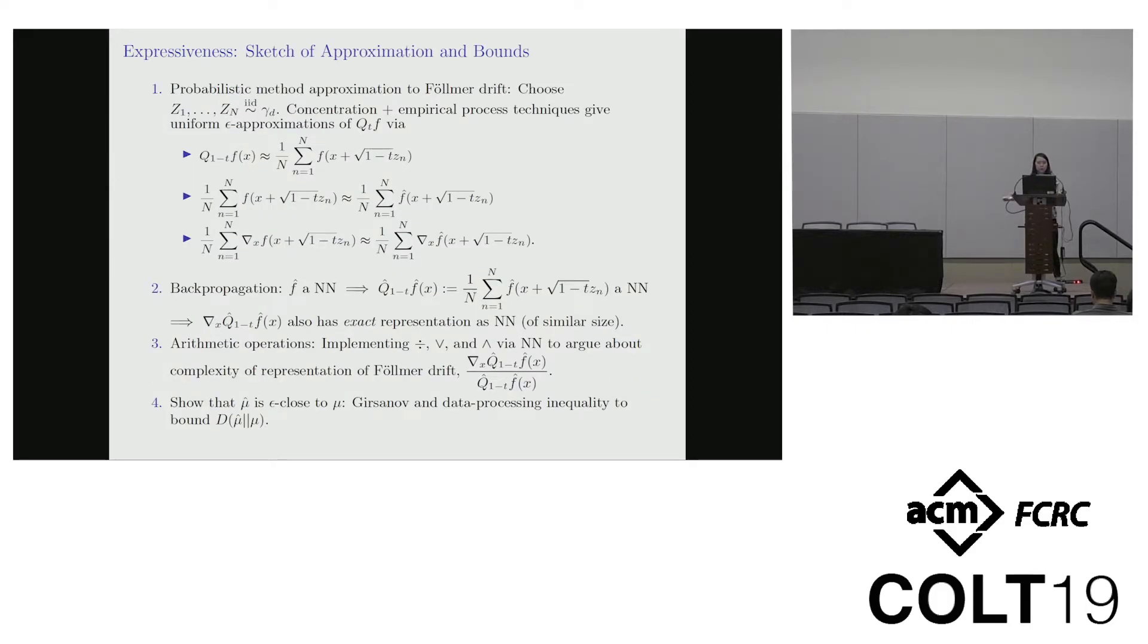So there are a few steps to the proof. Just for a sketch, the first step is using a probabilistic method argument to show that, for any epsilon, there is a uniform approximation to this Q_tf, which comprises your heat semigroup, that your Föllmer drift is made out of. And that you'll be able to approximate it uniformly using IID Gaussians. The next step is reasoning about the gradient, which is also efficiently represented using neural nets if your function itself is. And then the complexity of arithmetic operations like division of min and max for truncating outside of our set. So Föllmer drift grad F over F of stuff has this nice representation via neural net. The last step is using Girsanov to bound the divergence between your approximated Föllmer density distribution and your target.